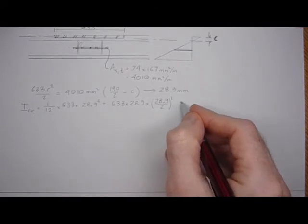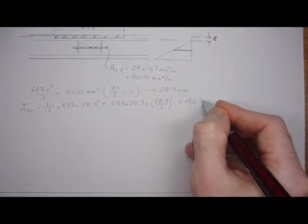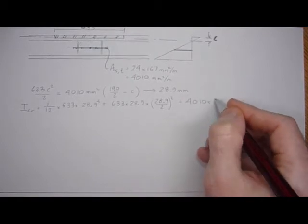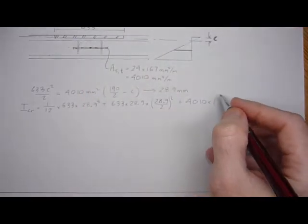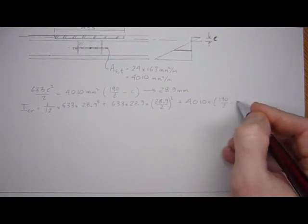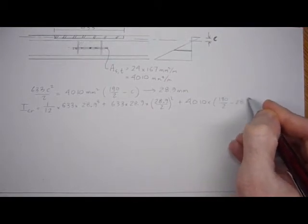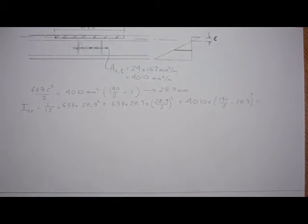And then finally the transformed area also has an AD squared component. 4010 times 190 over 2 minus C squared, 190 over 2 minus 28.9 squared. So let's work that out.